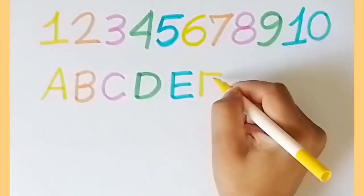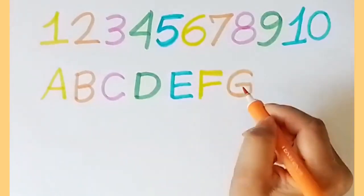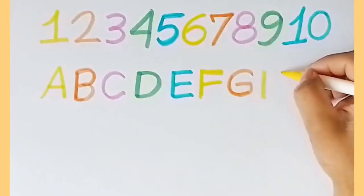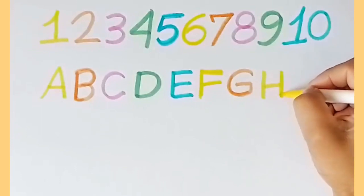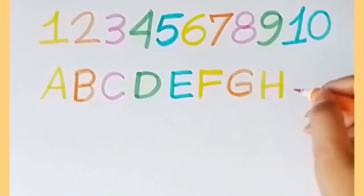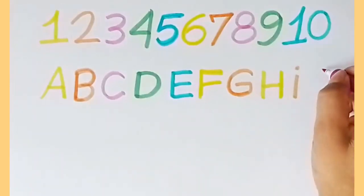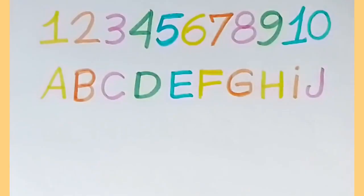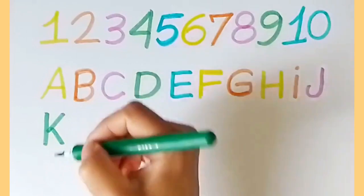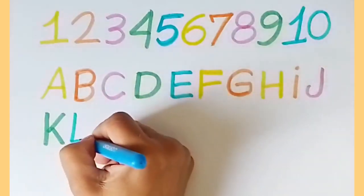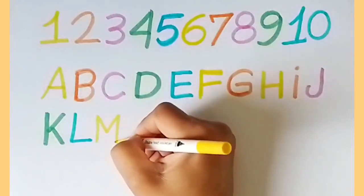And Z. Now I know my ABCs, next time won't you sing with me? A, B, C, D, E, F, G, H, I, J, K, L, M, N, O, P, Q, R, S, T, U, V, W, X, Y, and Z. Now I know my ABCs, next time won't you sing with me? A, M, M, N, O.